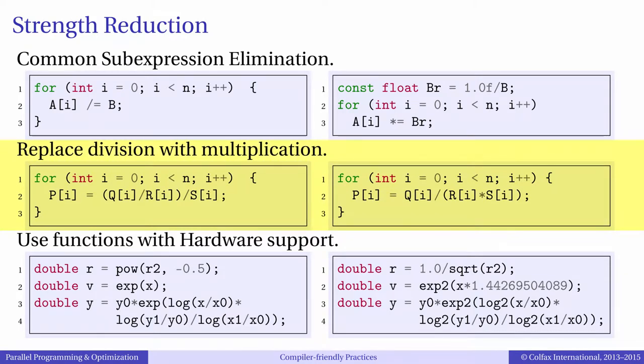Here is another example where we replace division with multiplication. This time, we algebraically transform our expression. Once again, our experience shows that you should not expect the compiler to do it automatically.